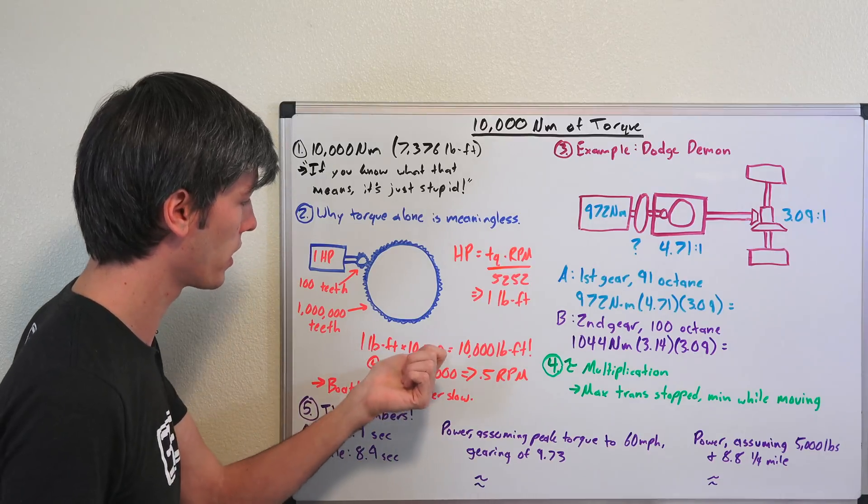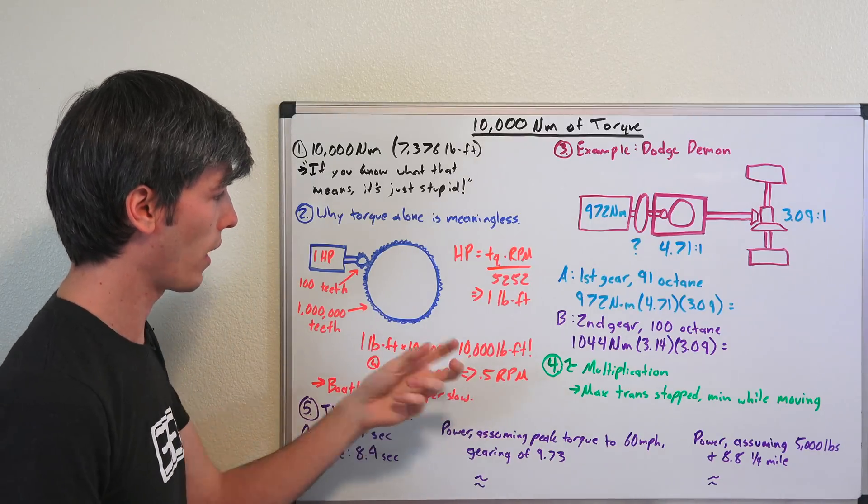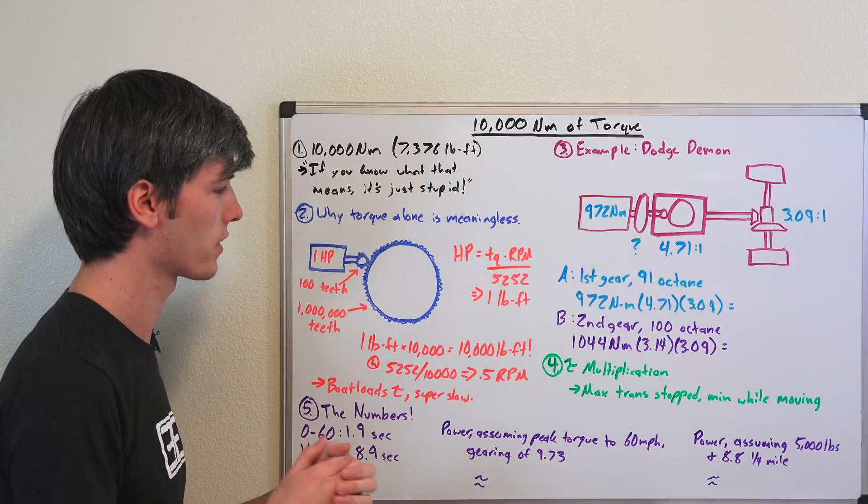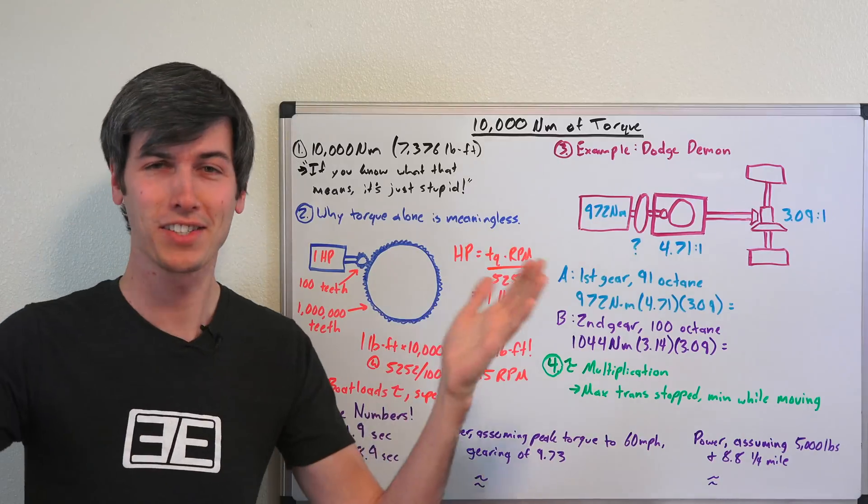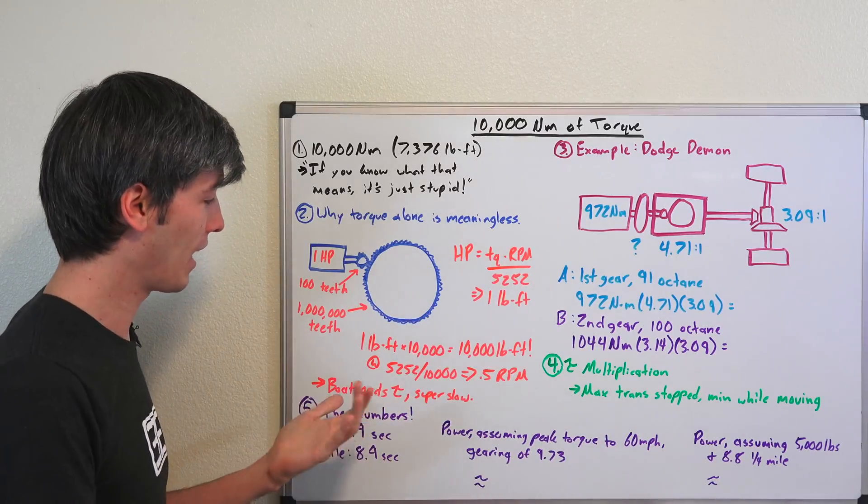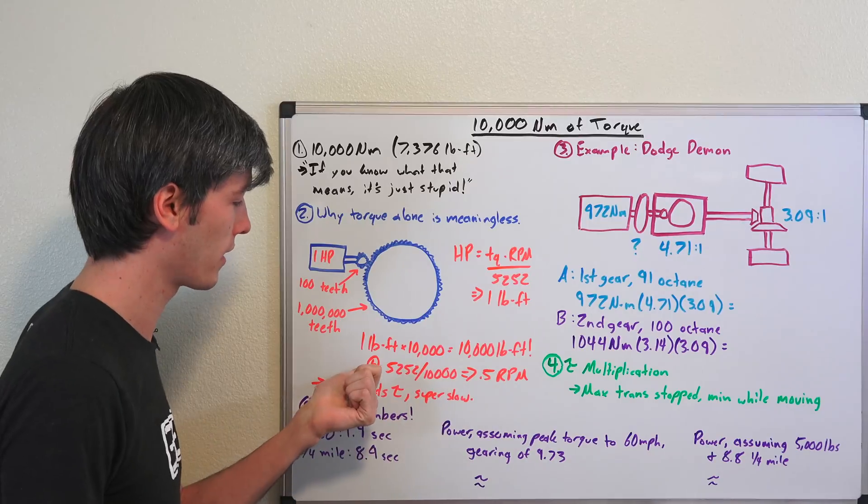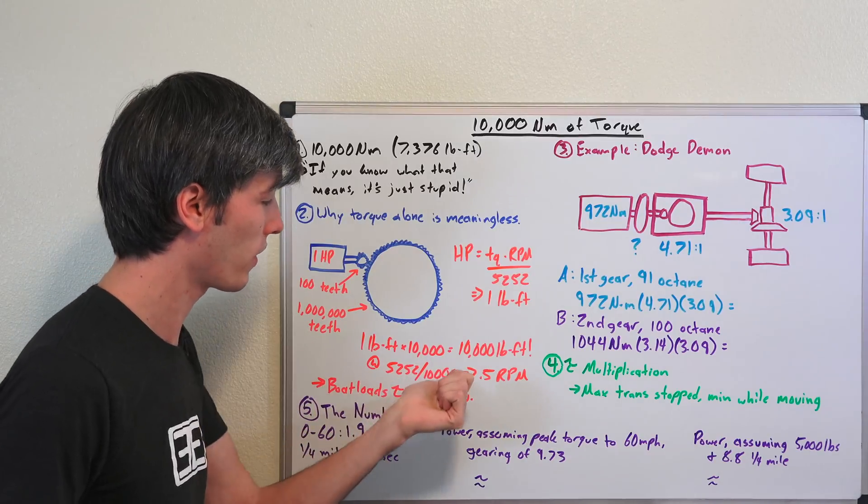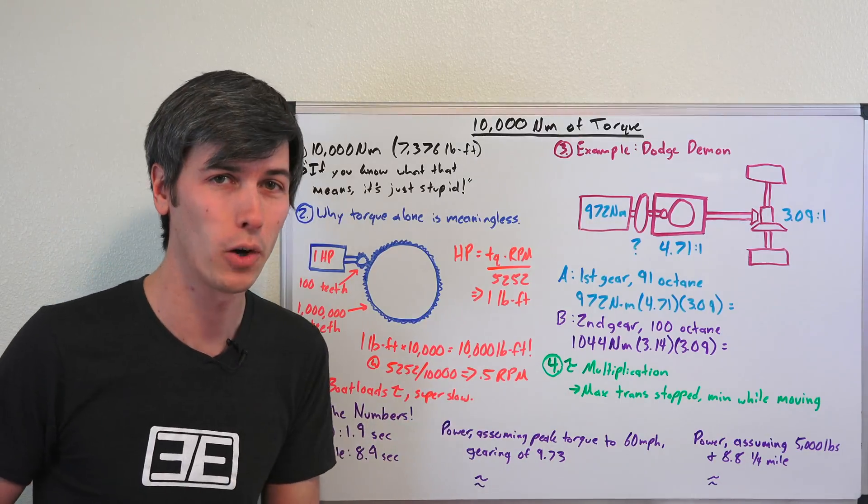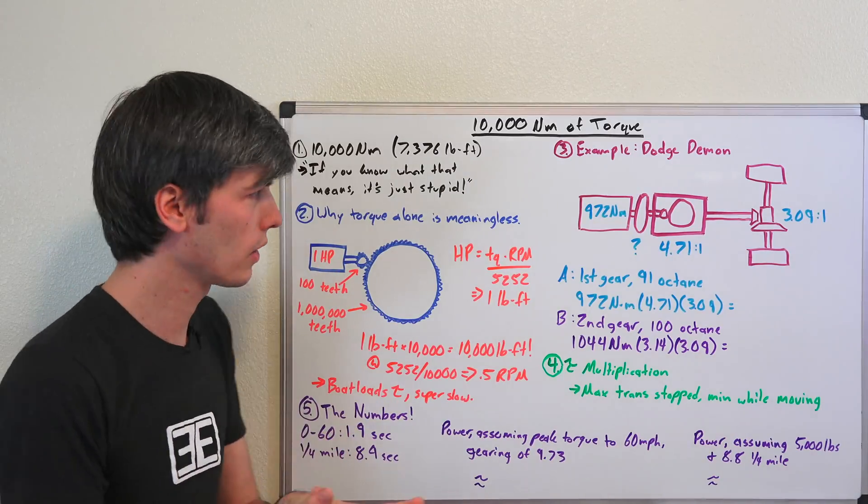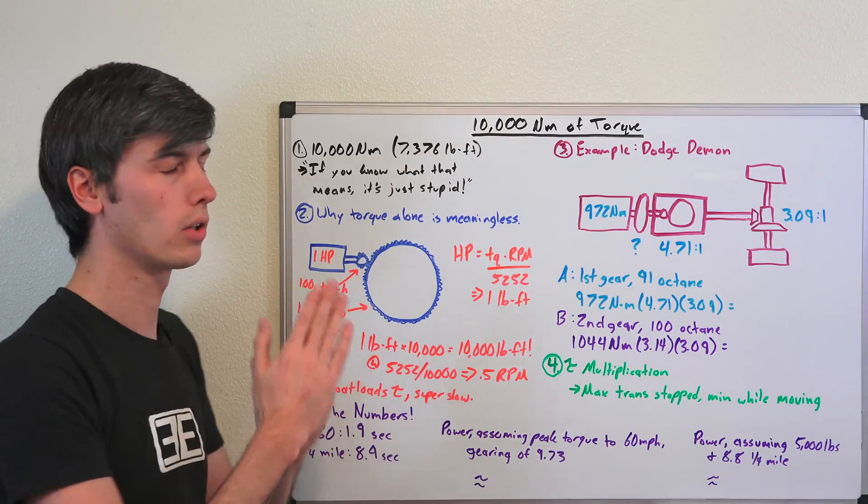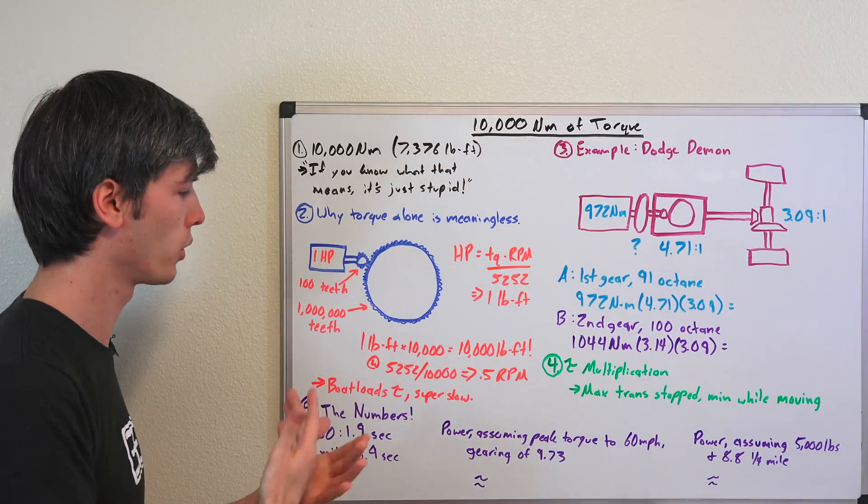So we now have a motor that is going to have an output of one pound-foot times our gear ratio of 10,000. So at the wheel or whatever would be attached to this it would be producing 10,000 pound-feet of torque, an insane huge stupid number. But the unfortunate news is that that would be at a speed of 5252 divided by 10,000 or about half an rpm. So extremely slow, boatloads of torque, very slow. So this is why a torque number alone without knowing the horsepower, without knowing the rpm, is truly a meaningless thing to know.